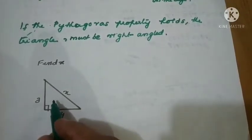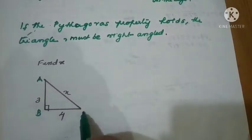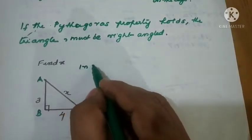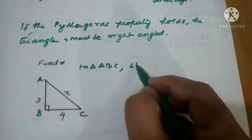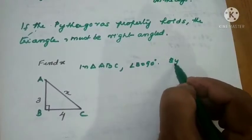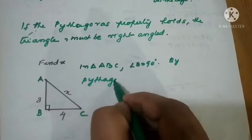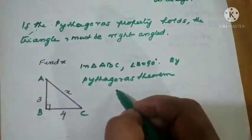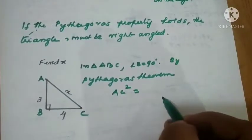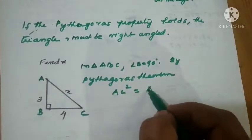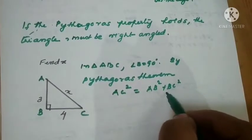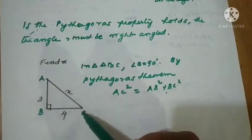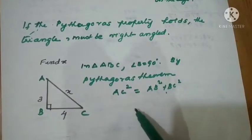Find x — that is, find AC. Angle B equals 90 degrees. In triangle ABC, angle B equals 90 degrees, so by Pythagoras theorem, AC is the hypotenuse. AC square equals the sum of the squares of the other two legs: AB square plus BC square. Whenever we have a right-angled triangle, hypotenuse square equals the sum of the squares of the legs.